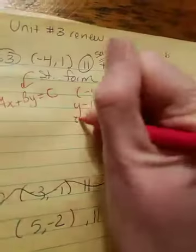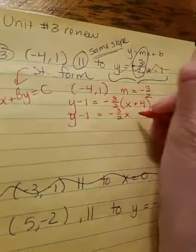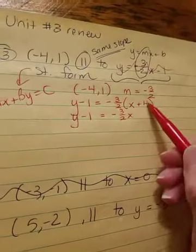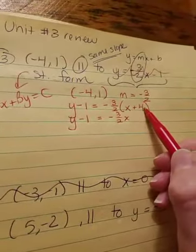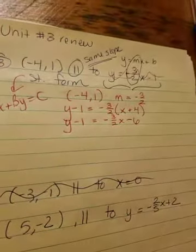Standard form, remember is ax plus by equals c. So, I need to basically get x and y on the same side. So, first I'm going to distribute in the negative 3 halves, and so negative 3 halves times 4, that's going to be negative 12 over 2, that's going to be negative 6.